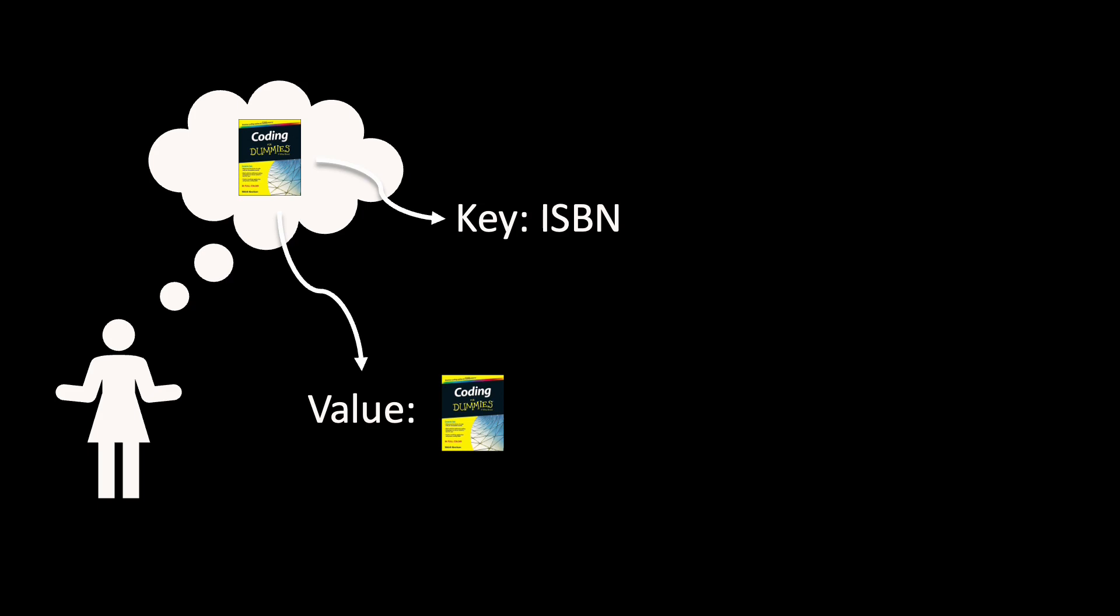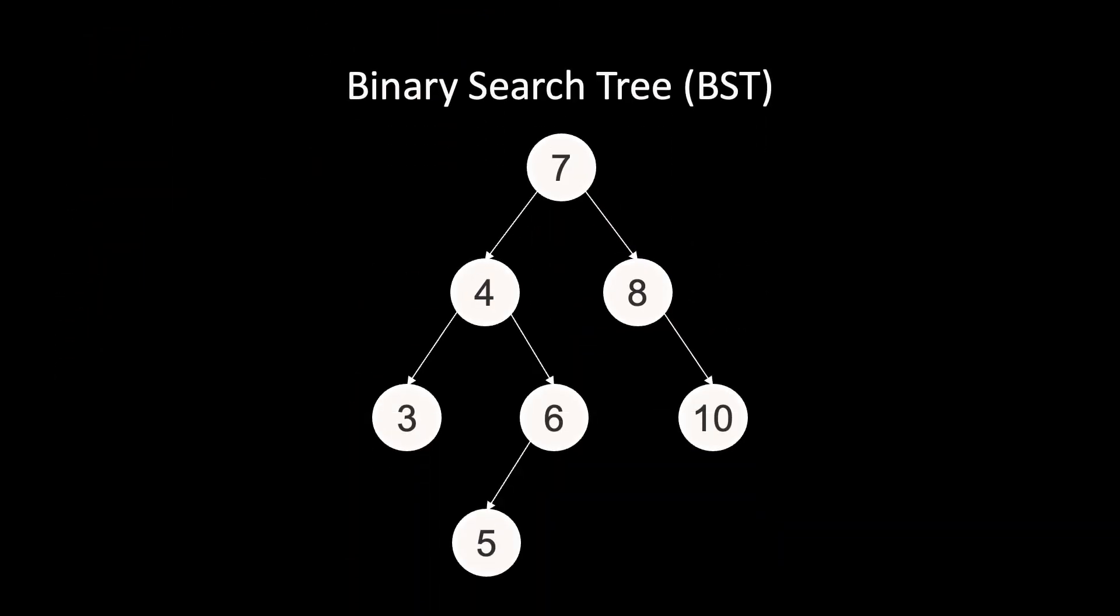The most basic operation of a dictionary is search. We have a key, and we want to search for the value of that key. A classic data structure to implement a dictionary is a binary search tree. Here we see a binary search tree with some keys. In our example, we just show the keys and not the values.